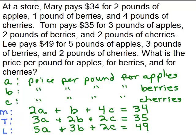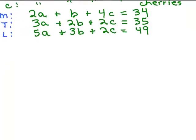Now we have 3 equations with 3 variables, and we can use the substitution or the addition elimination method to solve. The trick here is to first define your variables and write 3 equations — after that, you can use any method you want to solve for A, B, and C. I'm going to use the addition method and try to eliminate the C's. The first two equations are easy: if I take equation 3 and equation 2 together and multiply one of those equations by a negative, I'll have a 2C and a minus 2C, so that's what I'm going to do.